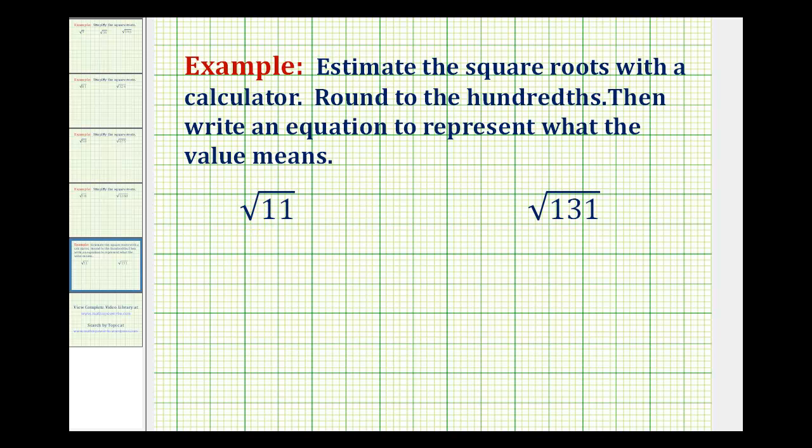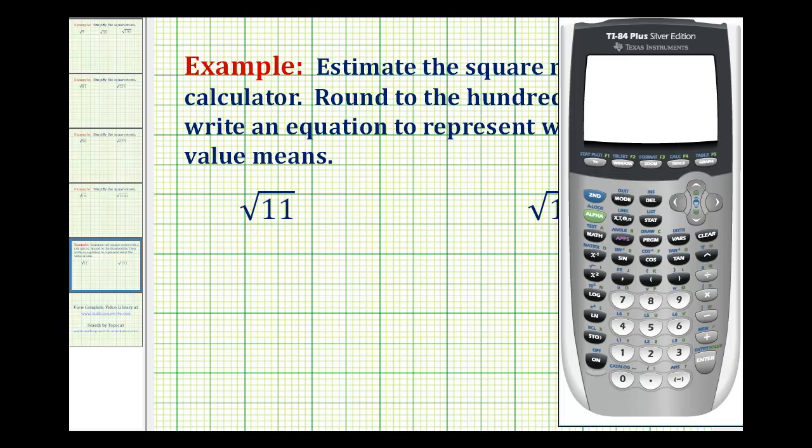To approximate the square root of 11 on the calculator, we're going to press second x squared, which brings up the square root, then we'll type in 11, and then a closed parenthesis, and then press enter.